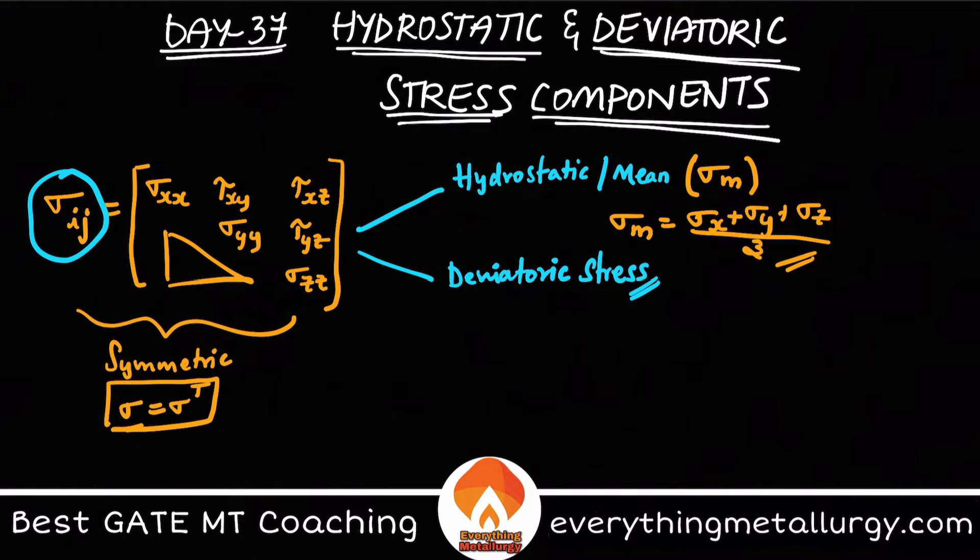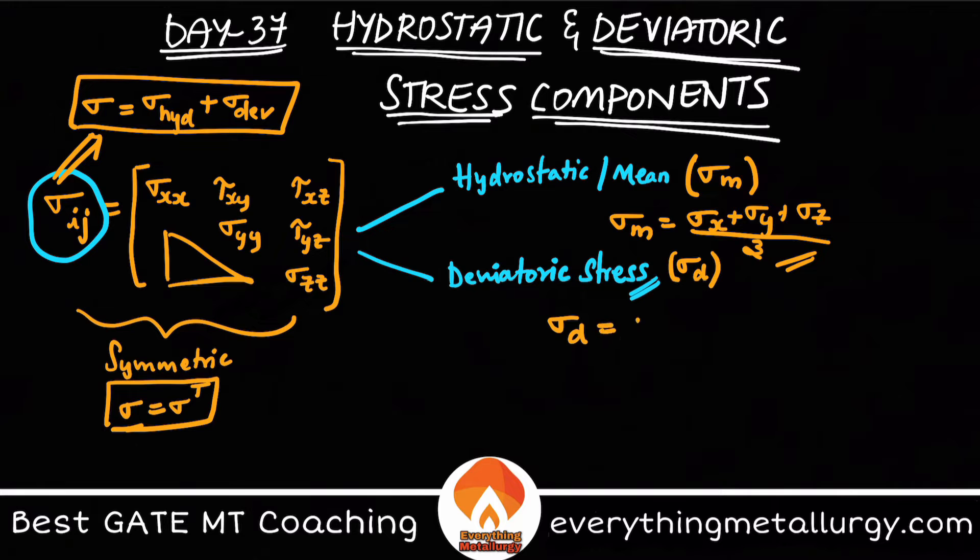One main reason is that the whole stress tensor sigma equals sigma hydrostatic plus sigma deviatoric. This is what we actually use to separate it out. If we name it sigma d, then sigma d will be sigma minus sigma hydrostatic. This will be your deviatoric stress.